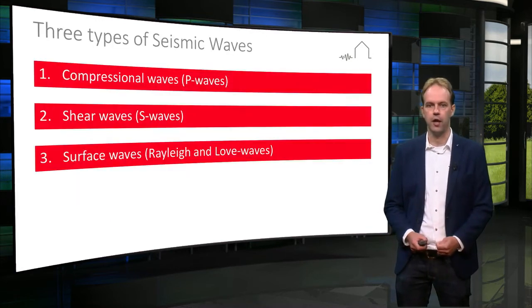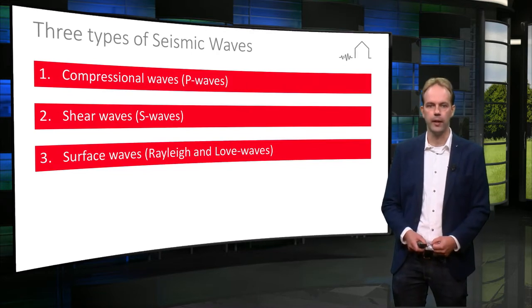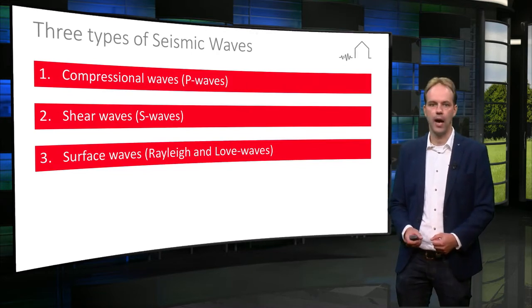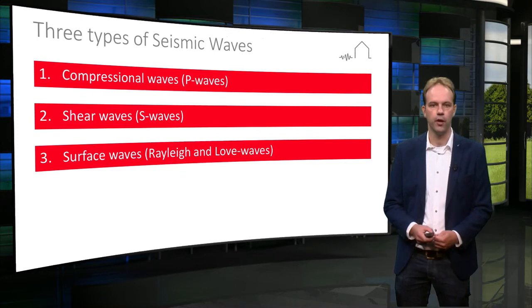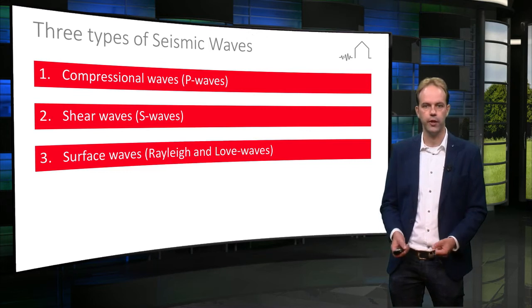Three types of seismic energy are generated by an earthquake and they radiate from the hypocenter to the surface of the earth. These three waves have their own characteristics and they travel at different velocities through the earth.